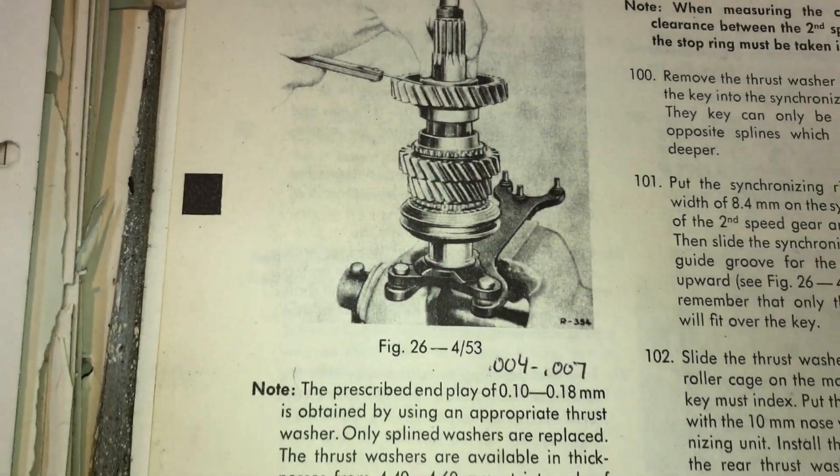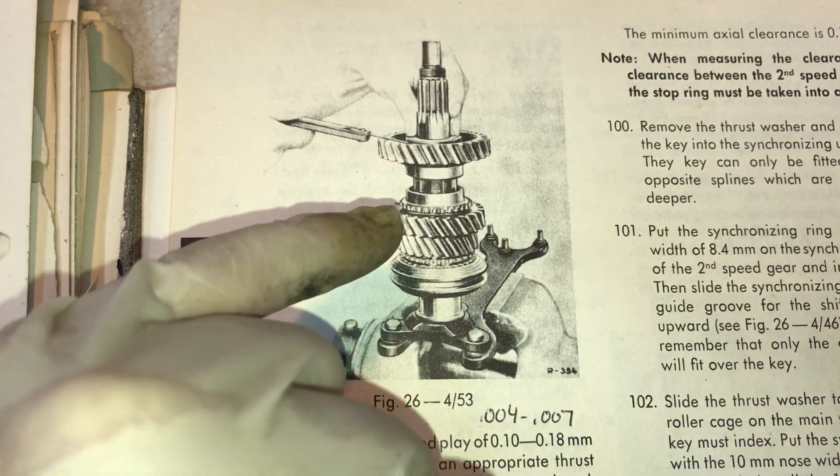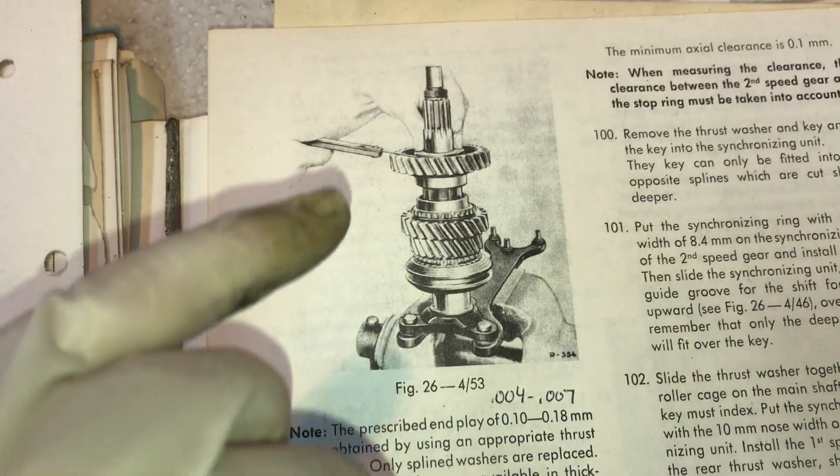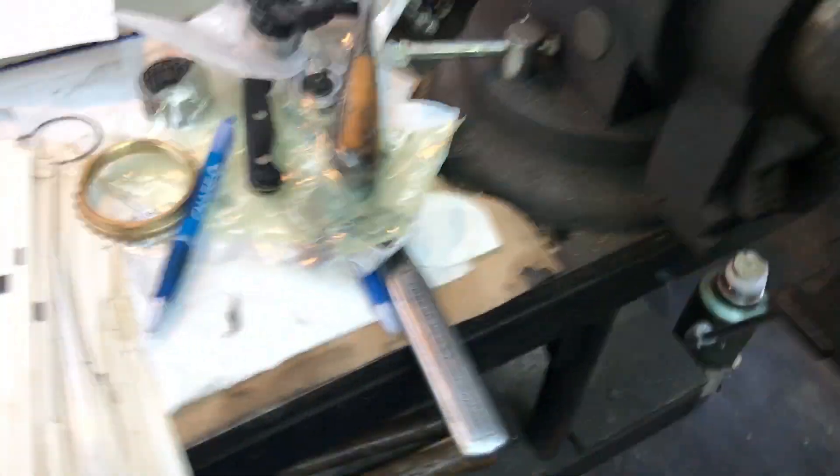Now we're at the point where we're going to check the end play for the first gear. You assemble it backwards, put your thrust washer up here, and then check with a feeler gauge, but it's more accurate to use the dial indicator.